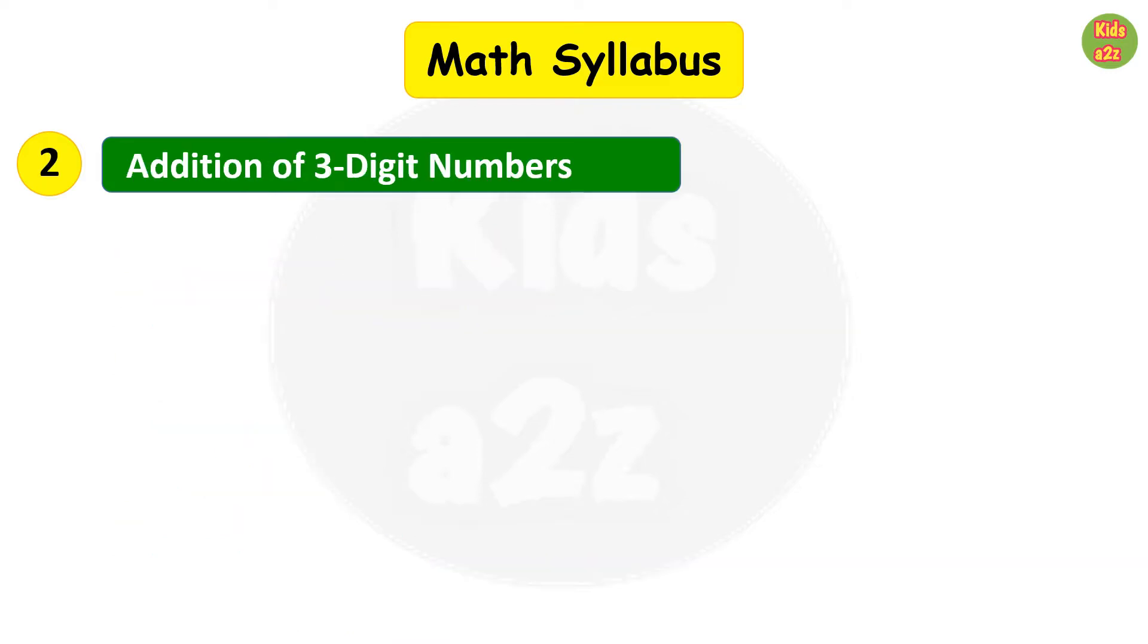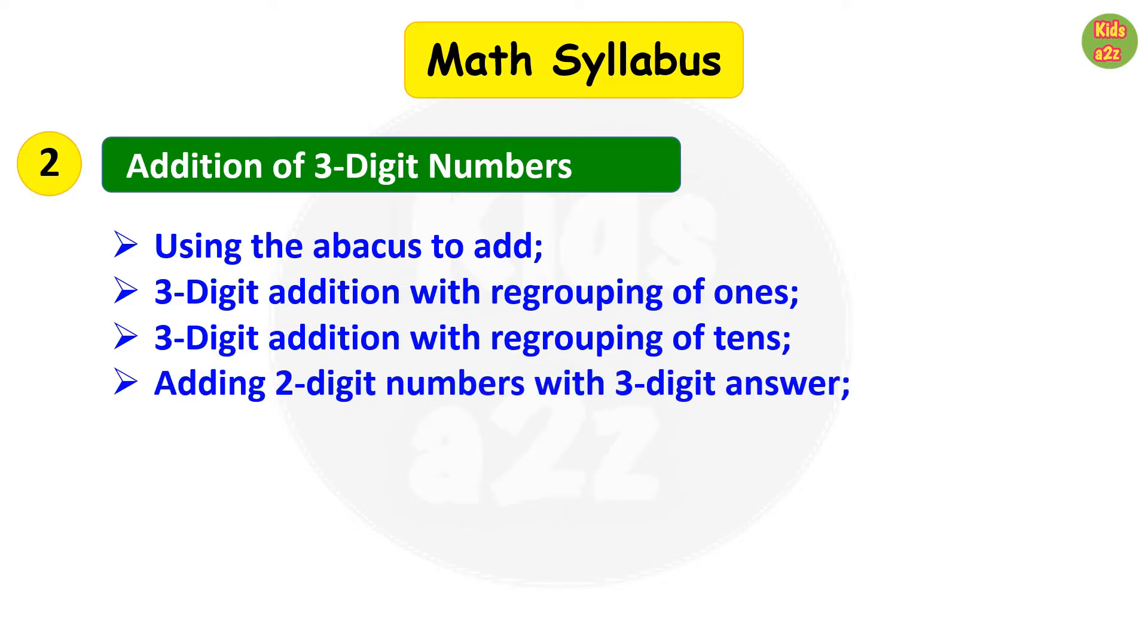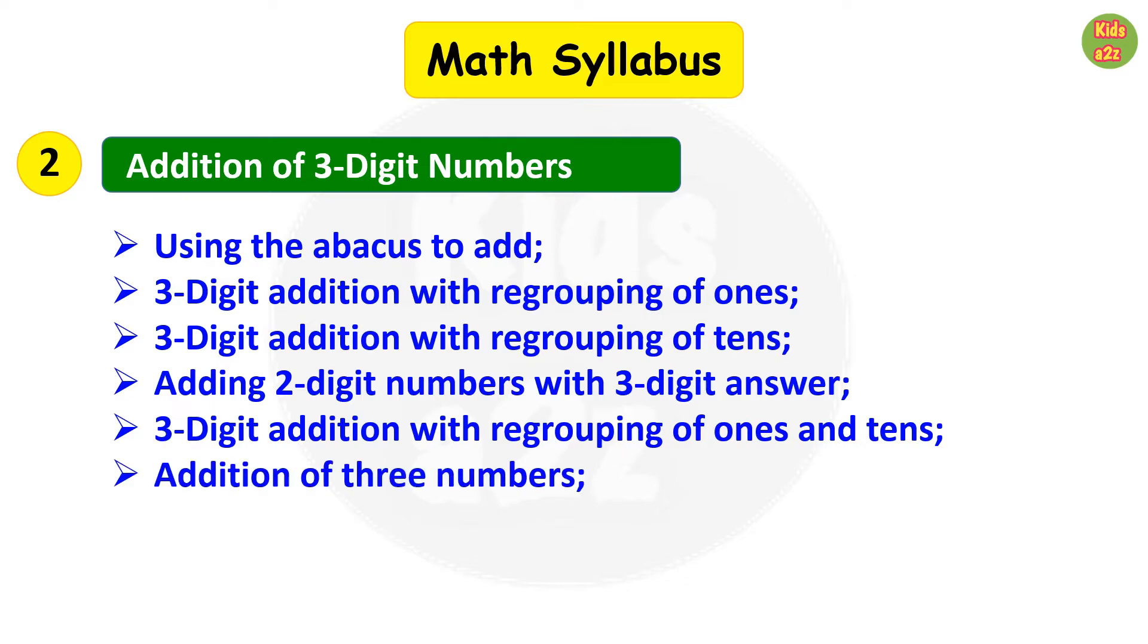Second chapter is addition of three-digit numbers. It includes using the abacus to add, three-digit addition with regrouping of ones, three-digit addition with regrouping of tens, adding two-digit numbers with three-digit answer—that means sum not exceeding 999—three-digit addition with regrouping of ones and tens, and addition of three numbers.